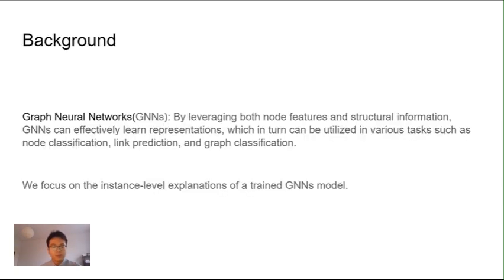Graph Neural Networks are designed to process graph data. They can leverage both node features and structural information to learn representations effectively, which can be used in different tasks such as node classification, link prediction, and graph classification.